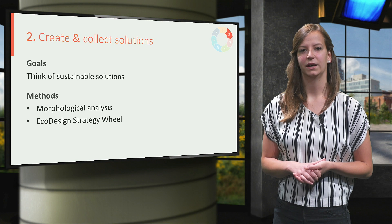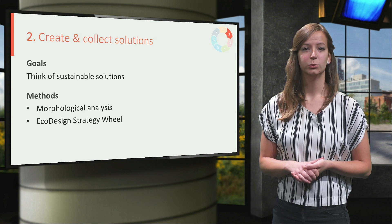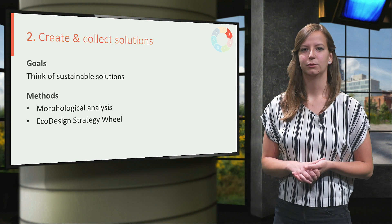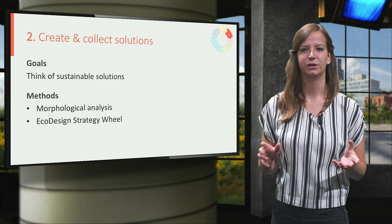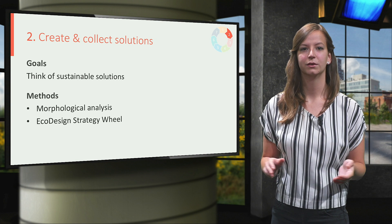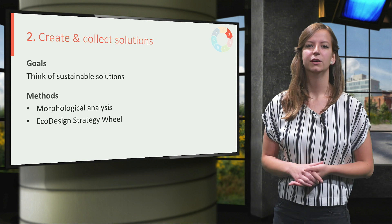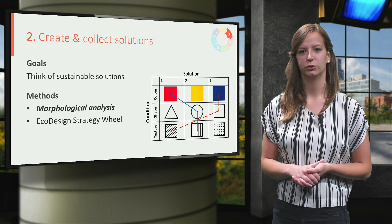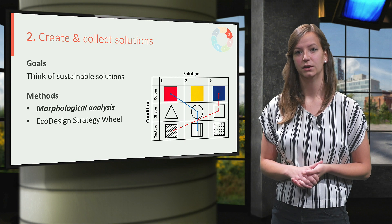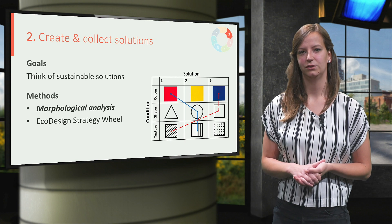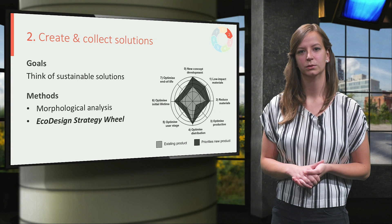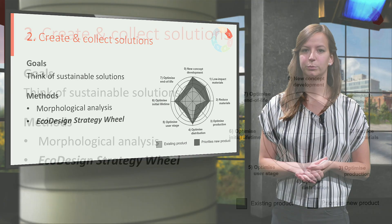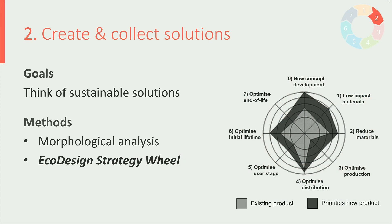The create and collect solutions phase. Here you will look into design directions and solutions for meeting your newly set requirements. There are many ways to do this. One of which is the well-known morphological analysis. The second method is called the eco-design strategy wheel. This method gives advice per phase on how to reduce impact. Keep in mind that other methods like bio-inspired design are also possible.